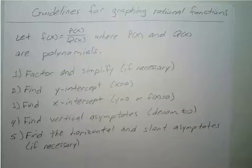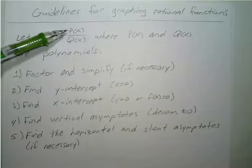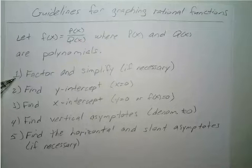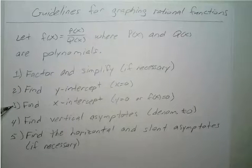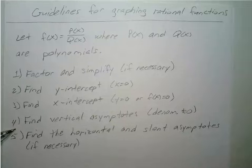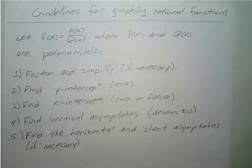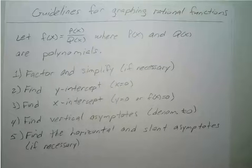If we let f of x equal p of x over q of x, where both are polynomials, the steps are: first, factor and simplify if needed; second, find the y-intercept by setting x equal to 0; third, find the x-intercept by setting y equal to 0; fourth, find vertical asymptotes by setting the denominator equal to 0; and fifth, find horizontal or slant asymptotes if necessary. We'll use a multiple choice graph option to identify the correct graph.